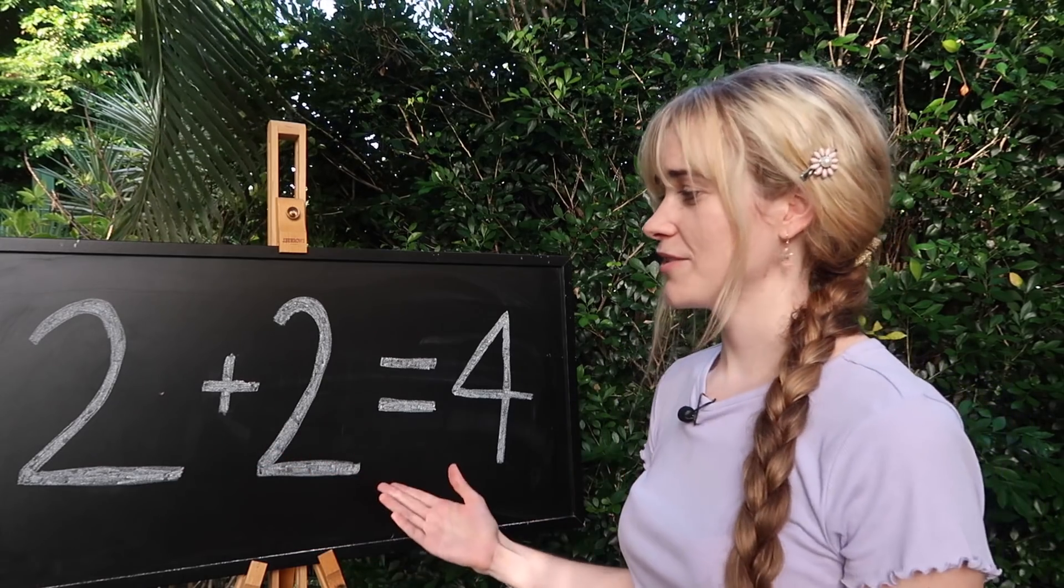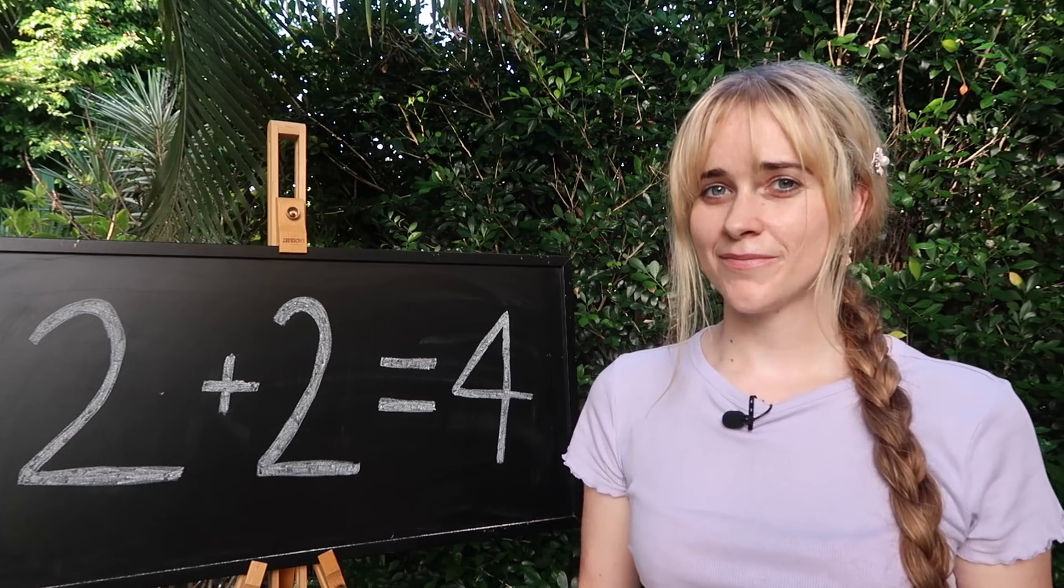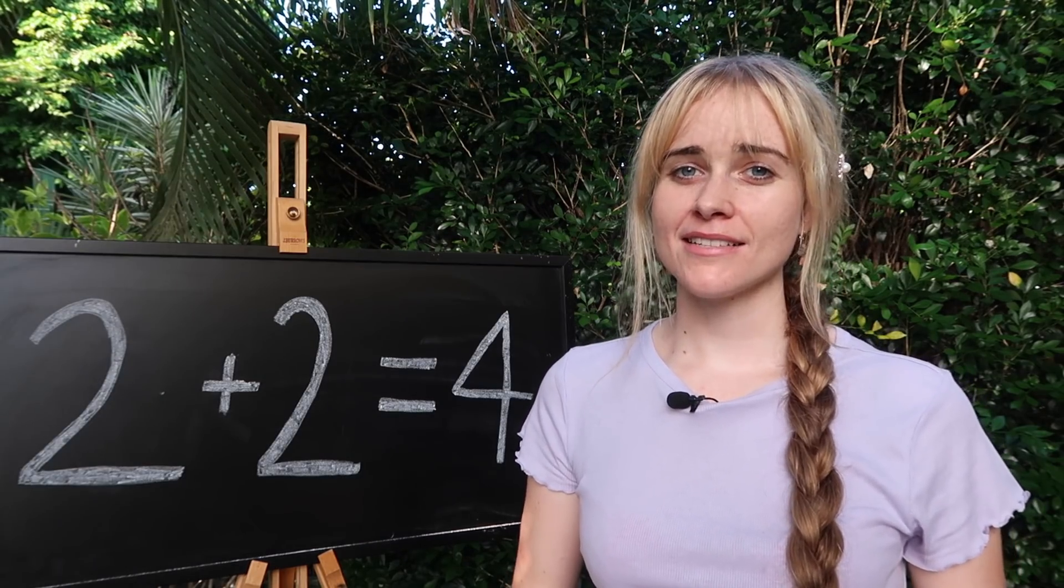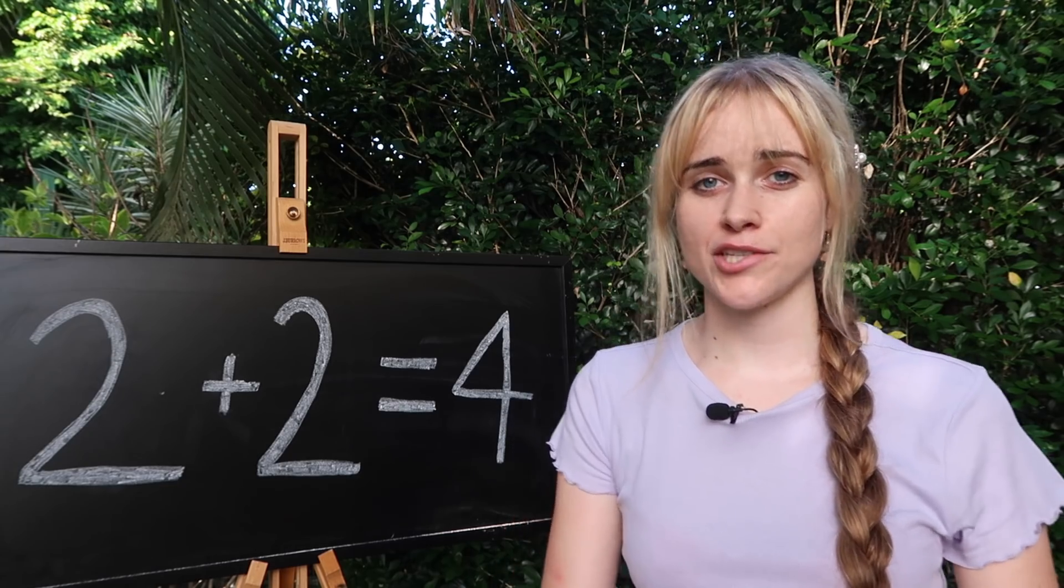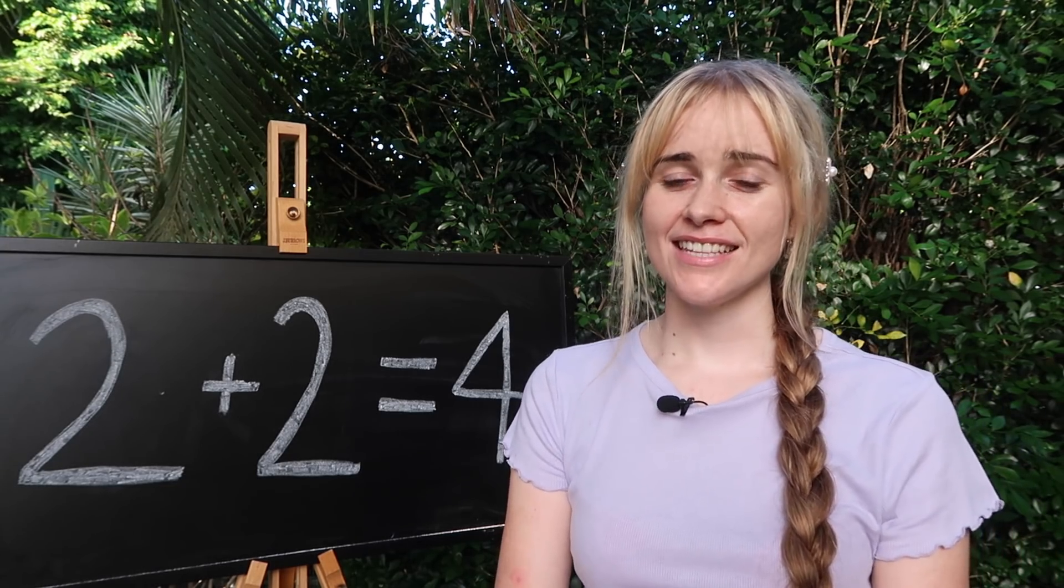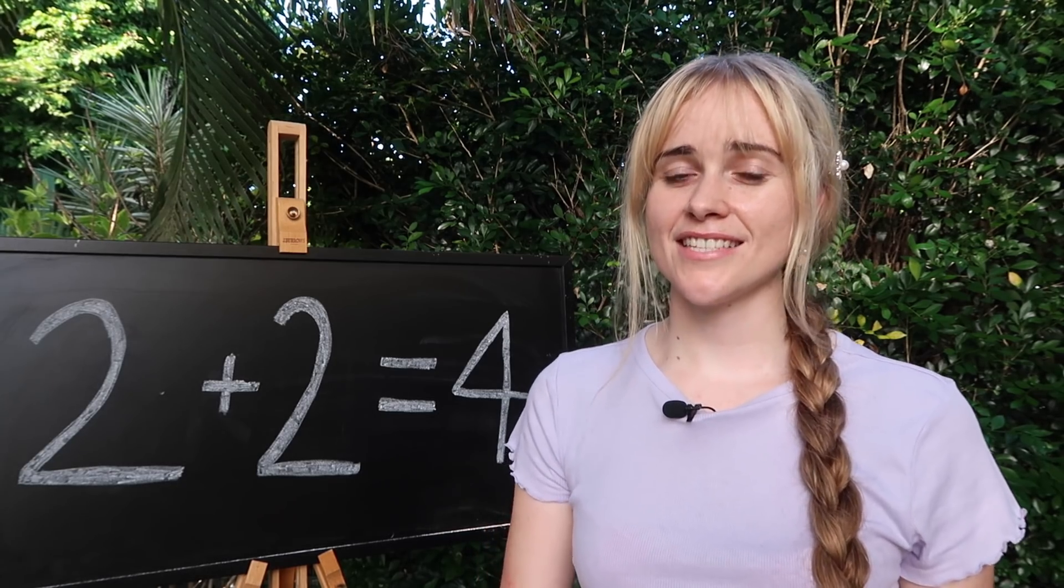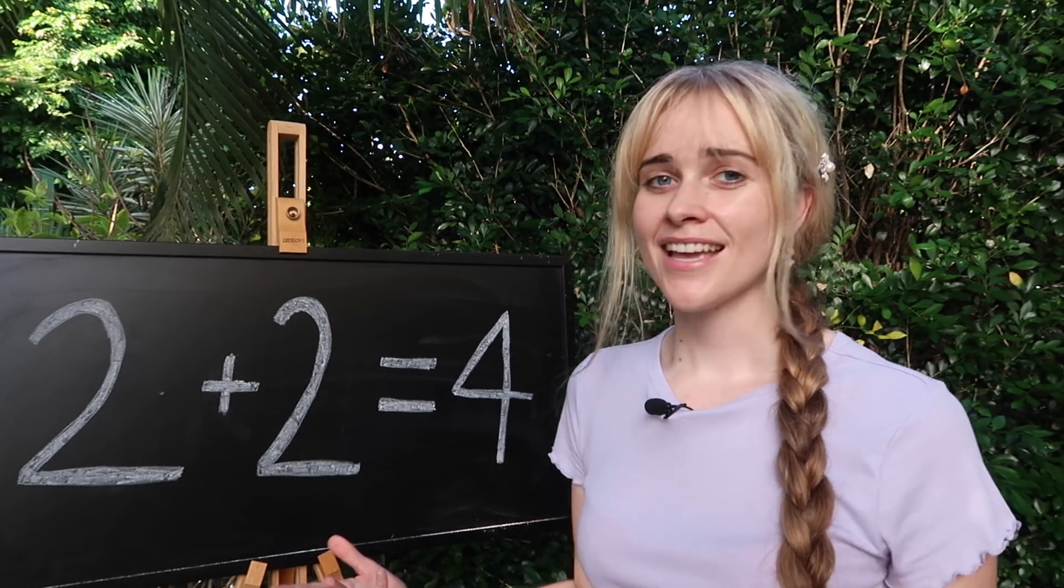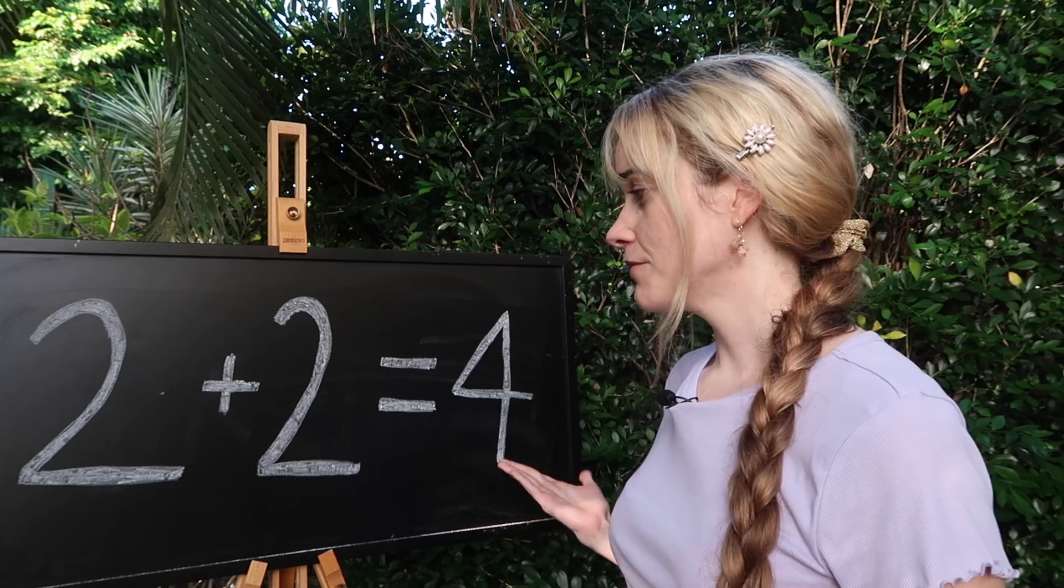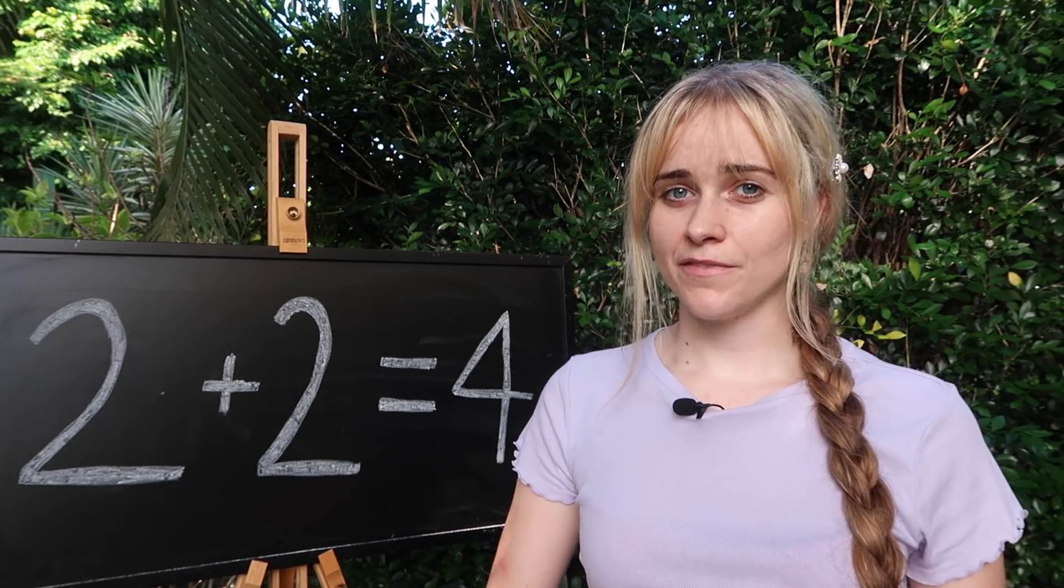We know that 2 plus 2 equals 4. That's true. Or is it? When proving something in mathematics we have to start with a series of statements that can be taken as true without argument. These are called our axioms and depending on which set of these statements we choose will determine how complicated it is to prove something even if what we're trying to prove such as 2 plus 2 equals 4 seems trivial and obvious.